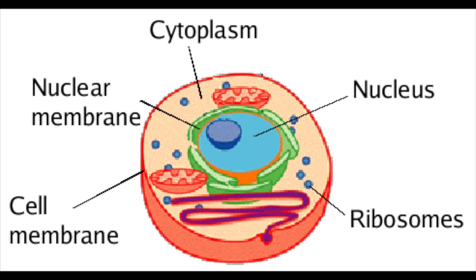Then we'll go on to cytoplasm — this is where the chemical reactions happen. Then the ribosomes, which is where proteins are made; that's protein synthesis, a bit like photosynthesis but with proteins. And then mitochondria, which is where aerobic respiration happens to release energy in our cells.